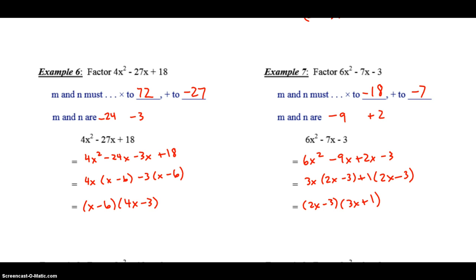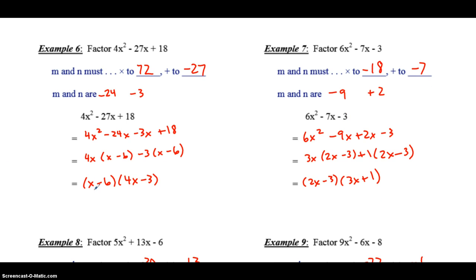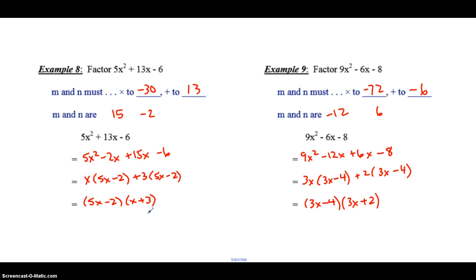Example number 6 and 7. So you should have x minus 6 and 4x minus 3. And again, if you have them reversed, that's okay. Over here, 2x minus 3 and 3x plus 1. And check out your last two. 8 and 9. So we've got 5x minus 2 and x plus 3. 3x minus 4 and 3x plus 2. Alright guys, that's it for your video today. Hope you got it all done and I'll see you in class tomorrow. Time to do a passport.